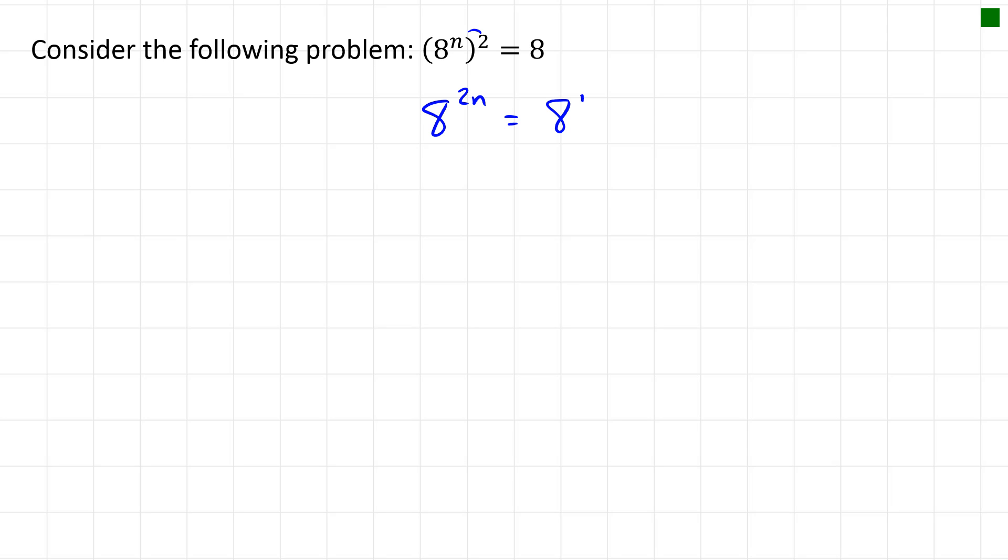So we would have to have 2 times something that gives us 1, which means n must equal 1/2. So 8 to the power of 1/2 to the power of 2 equals 8, and that makes sense.